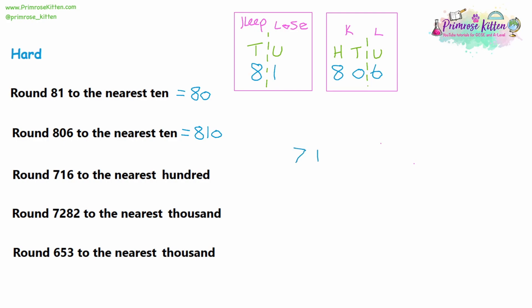Question 3: we have 716. Label the place values: units, tens, hundreds. This time we're rounding to the nearest hundred, so rule off after the hundreds column. We keep the 7 and lose everything on the right. The first number we're losing is a 1, so we are not rounding up. We write down 7, and fill in zeros for tens and units so the 7 stays in the hundreds column. The answer is 700. A common mistake is looking at the 6 in the units column and thinking it's 5 or higher — but you only look at the first number you're losing. The 1 in the tens is what matters; you can ignore the rest.